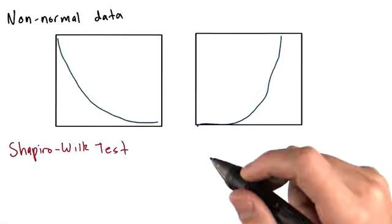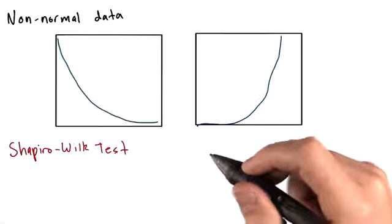First off, we should have some machinery in place for determining whether or not our data is Gaussian in the first place.